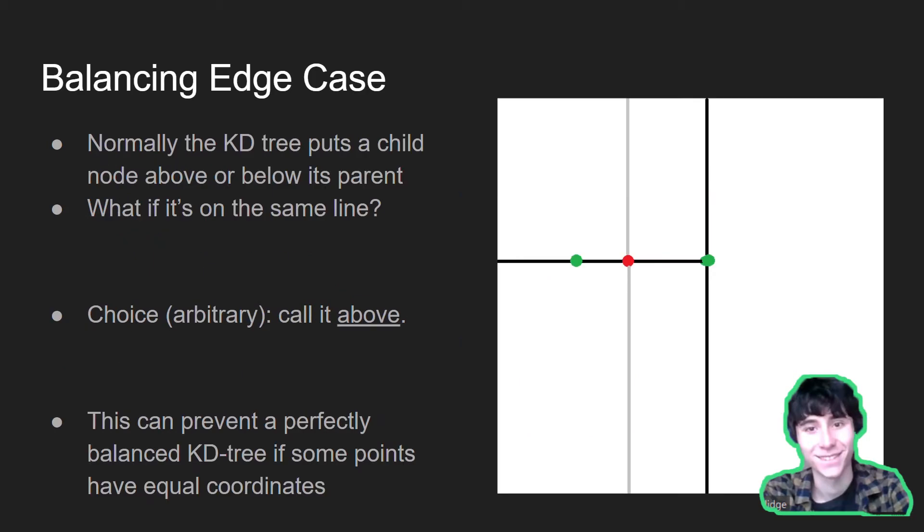When balancing the KD-tree, it is important to note that there is an interesting edge case. Normally, if we look at this KD-tree here, the green node over here is a child of the middle green node, which is the root, and has a second child, which is this red node here. Normally, the children of a KD node will just get put into either the above or below subtree, depending on whether they're on the above or below side of the associated line. But what happens when the point is on the line?